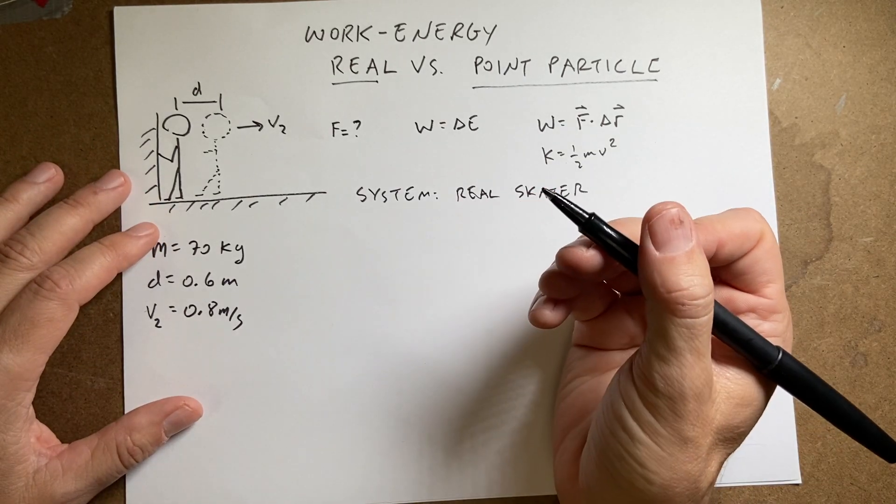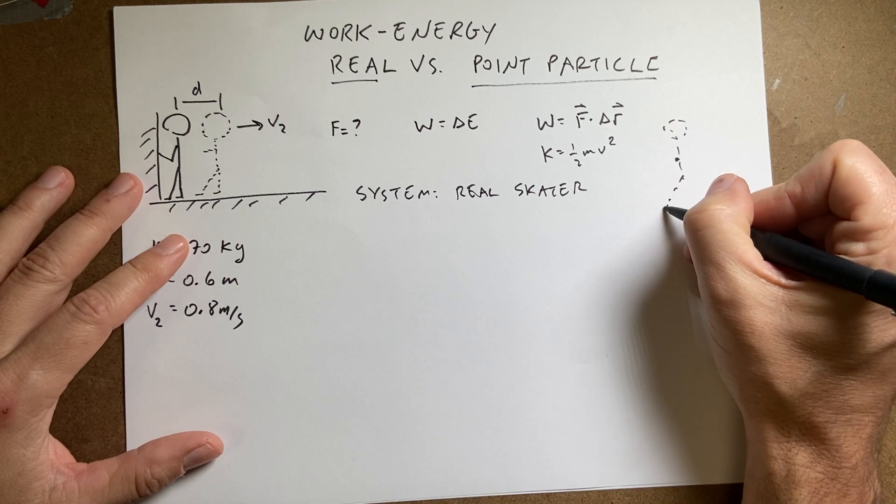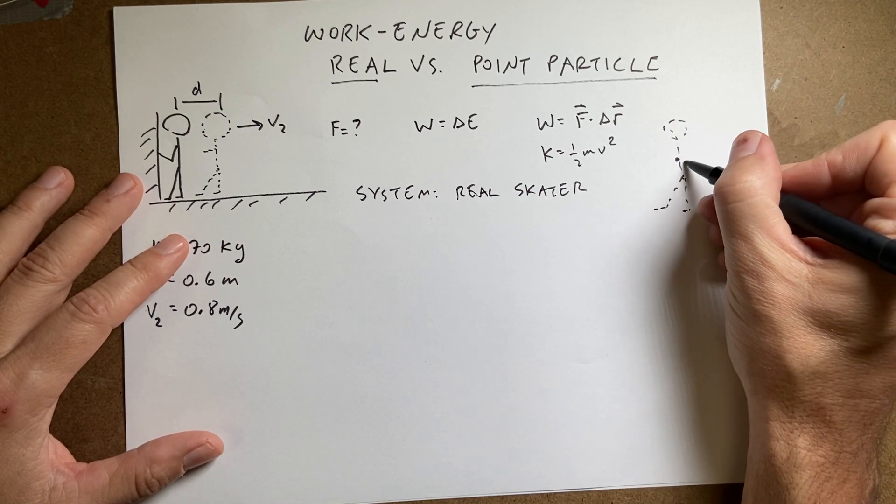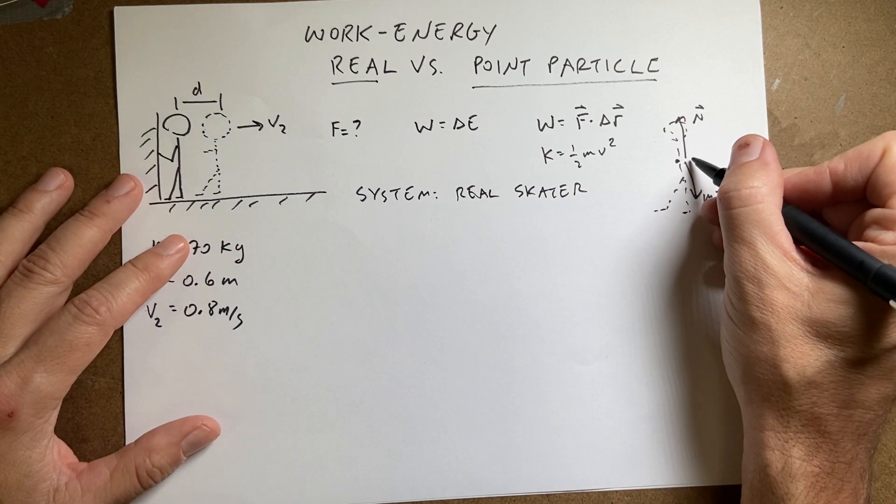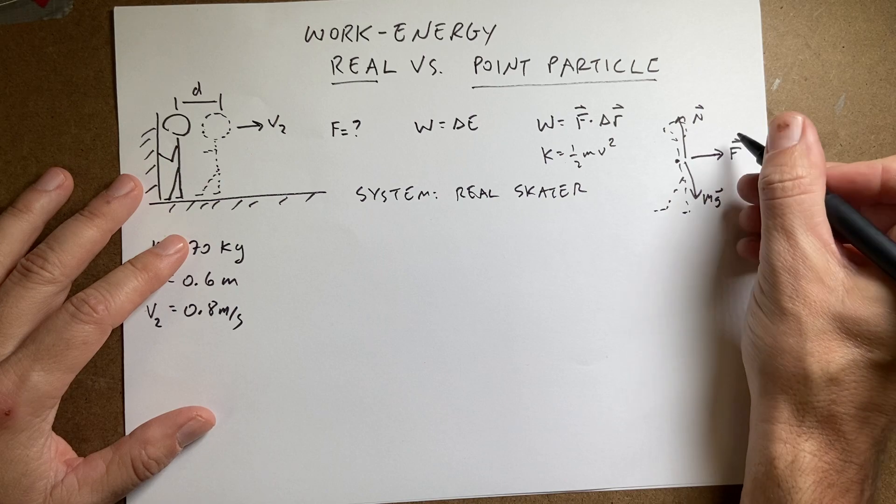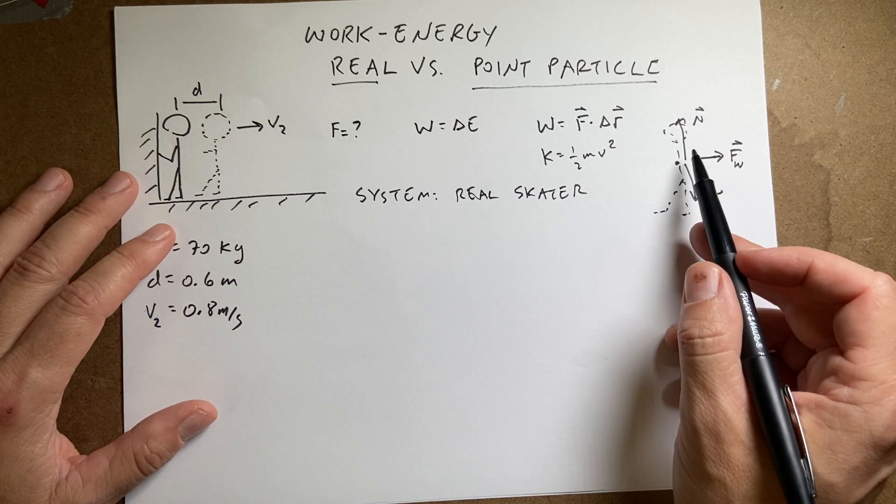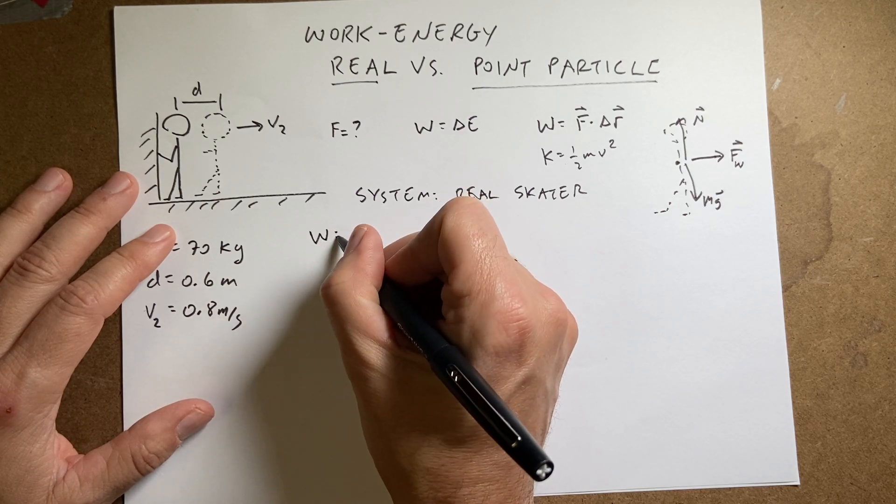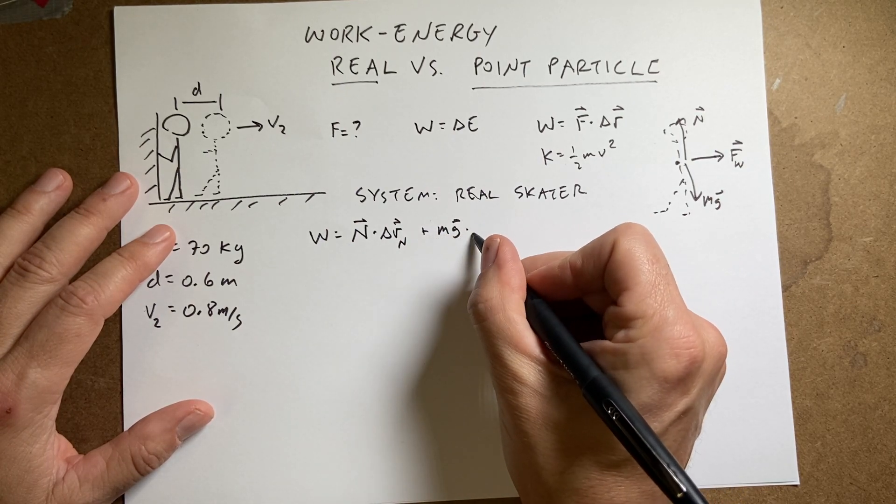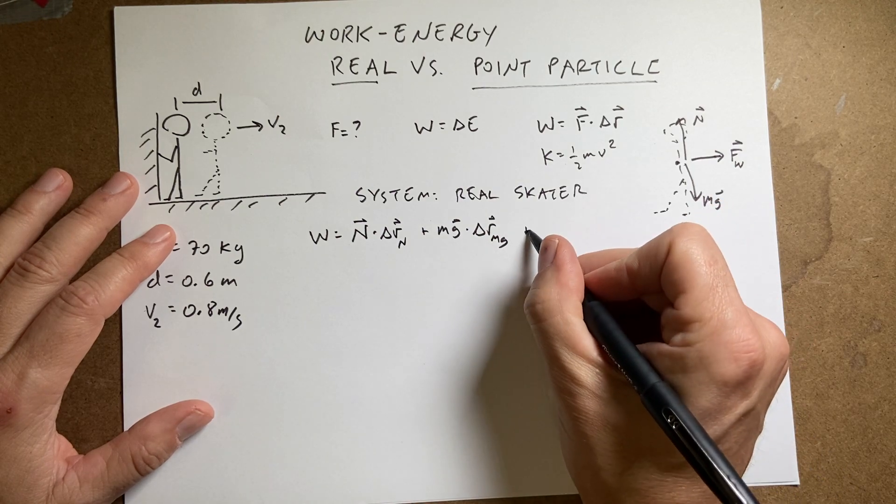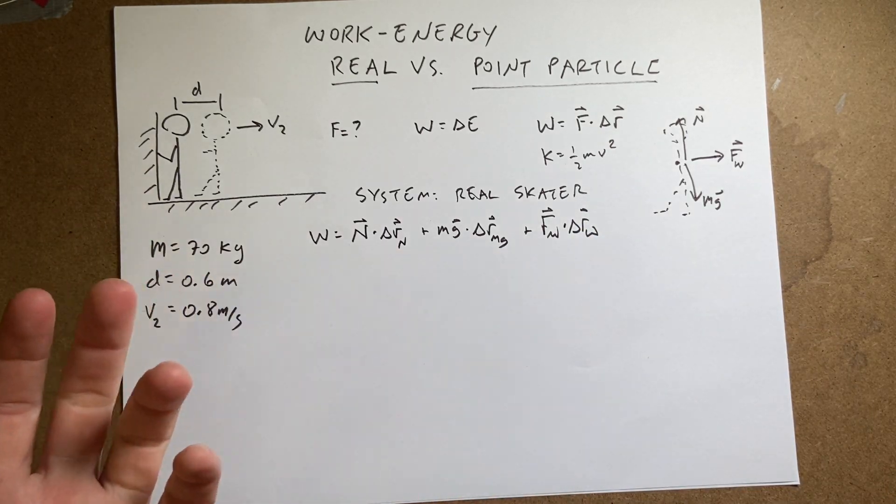I can calculate the work. In this case, there's actually three forces on the skater. I'm going to draw it over here. Here's my skater as she's pushing away. I have the downward gravitational force. I have the upward normal force from the ice. Then I have the force of the wall pushing on her this way. Those are the forces on her, F wall. Let's calculate the work done by all these forces. The work is going to be n dot delta r_n plus mg dot delta r_mg plus fw delta r_w.